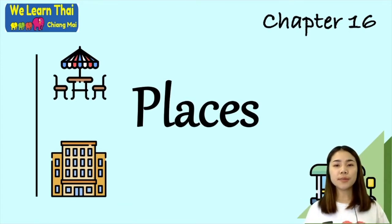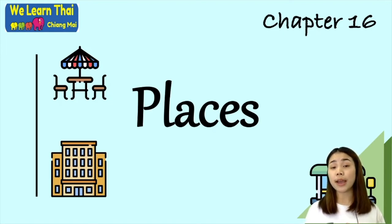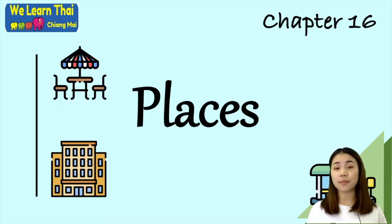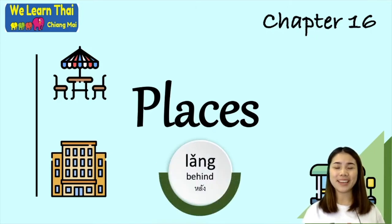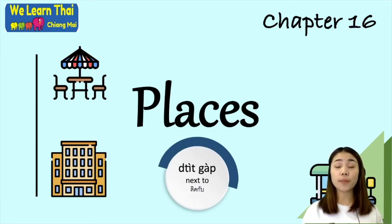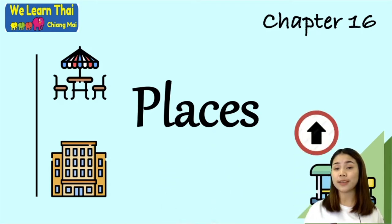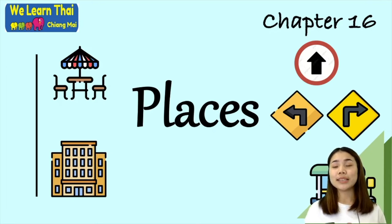Hello everyone, welcome to We Learn Thai e-learning. Today we are on Chapter 16, and this chapter is based on places. In this chapter you will be learning about how to tell the places, how to tell the direction, or talk about some prepositions like the word 'in front of', the word 'behind', the word 'next to', and also talk about direction like the word 'go straight' or 'turn left' or 'turn right'. You will also study more vocabulary from level one.